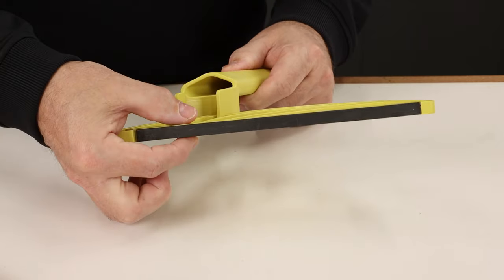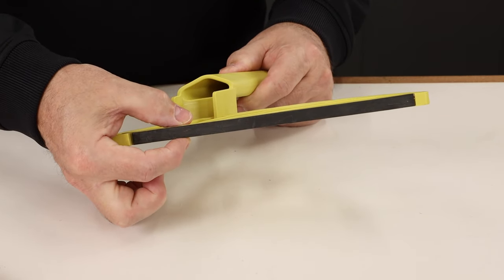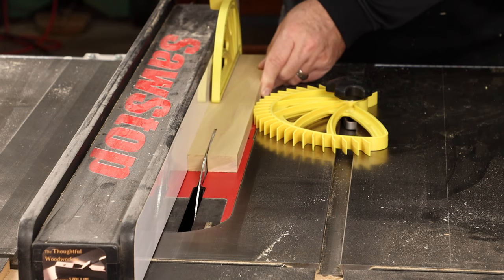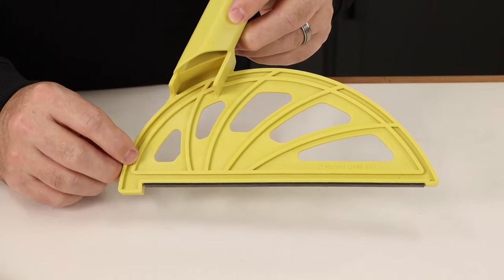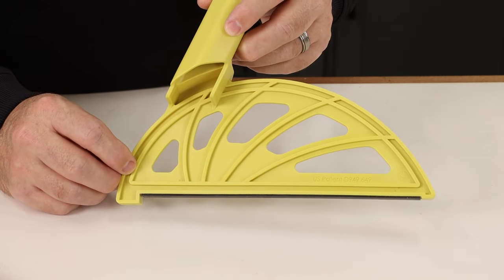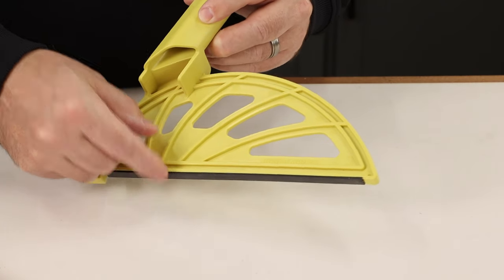The other thing it has going for it is this really narrow dimension here. This is just about three-eighths of an inch wide, so there's very few applications that you won't be able to get this between the fence and the blade. That rubber pad just helps with traction.